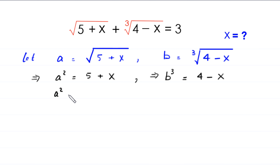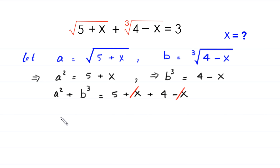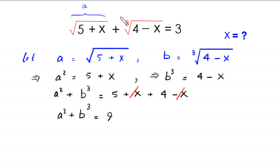If we add these two equations, this will become a squared plus b cubed is equal to 5 plus x plus 4 minus x. The x terms cancel out, and this becomes a squared plus b cubed is equal to 9. And in the original equation, if we replace square root of 5 plus x with a and cube root of 4 minus x with b, we get a plus b is equal to 3.